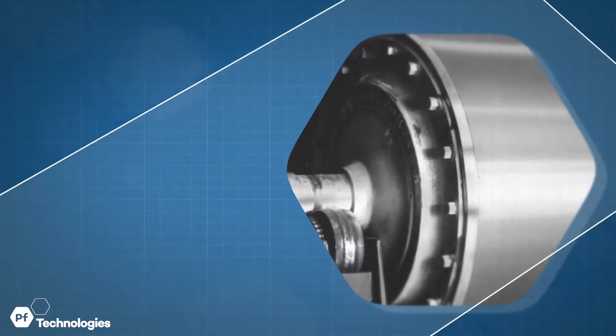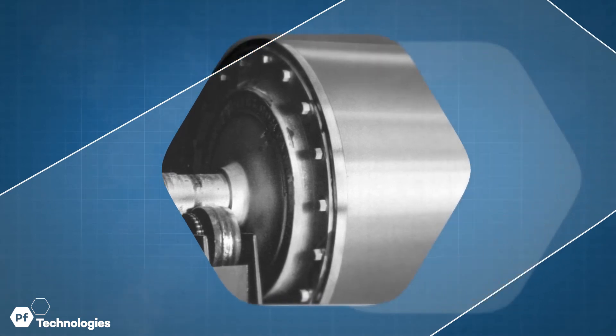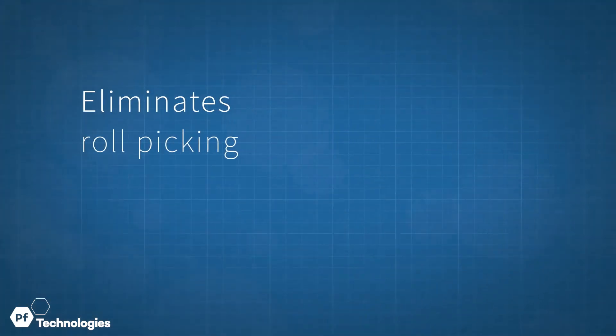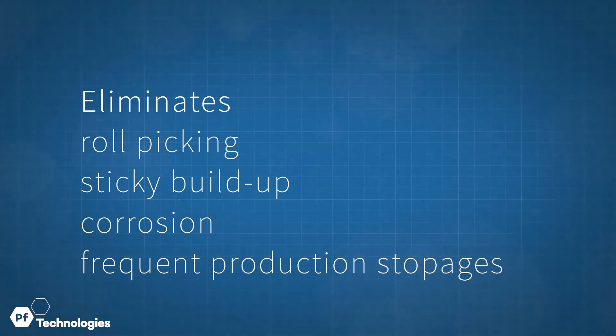Fluoropolymer roll-release products save time and money in paper production by eliminating roll-picking, sticky build-up, corrosion, and frequent production stoppages for cleaning and maintenance.